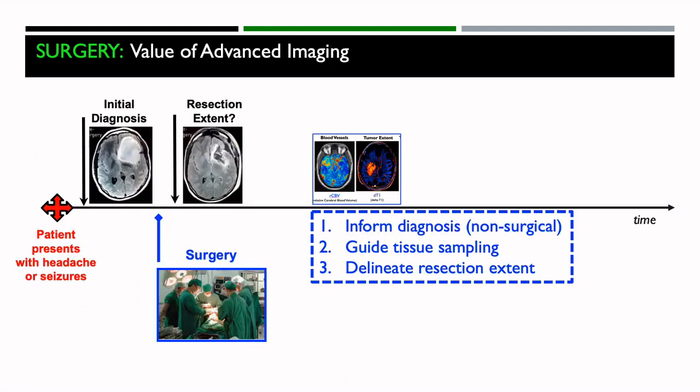In summary, as the first step of the treatment paradigm, the value of advanced imaging is that RCBV maps can inform diagnosis, give some indication of how aggressive the tumor is, guide tissue sampling towards the most aggressive site, and with our delta T1 maps, delineate the extent of resection. These are important uses for these markers.